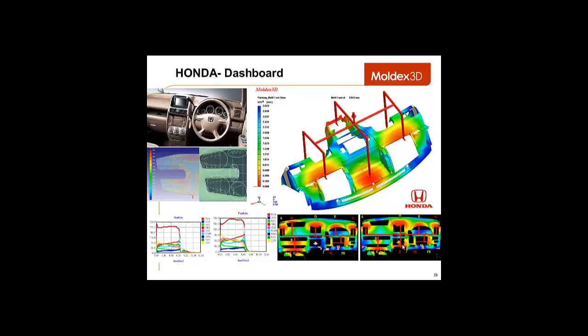This is an indication of unbalanced flow. So, we modified the gate design to improve on this and also improve the weld line locations and the packing and warping.